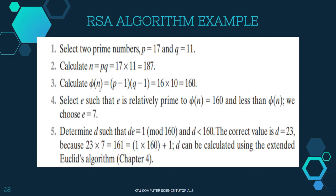The next step is to calculate φ(n), using the equation φ(n) equals φ(p) into φ(q). Since p and q are prime numbers, φ(p) equals p minus 1. So φ(17) is 16 and φ(11) is 10. Therefore φ(n) equals 16 into 10, which is equal to 160.